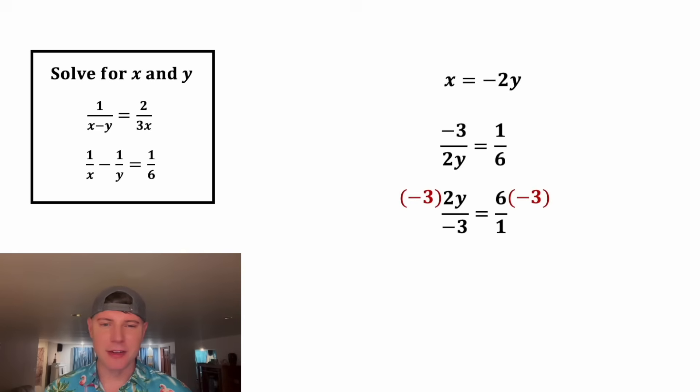On the left-hand side we'll have 2y, and on the right-hand side we'll have negative 18. From here, to get y all by itself, we can divide both sides by 2. On the left, 2y divided by 2 is y. On the right, negative 18 divided by 2 is negative 9. So we've now solved for y.